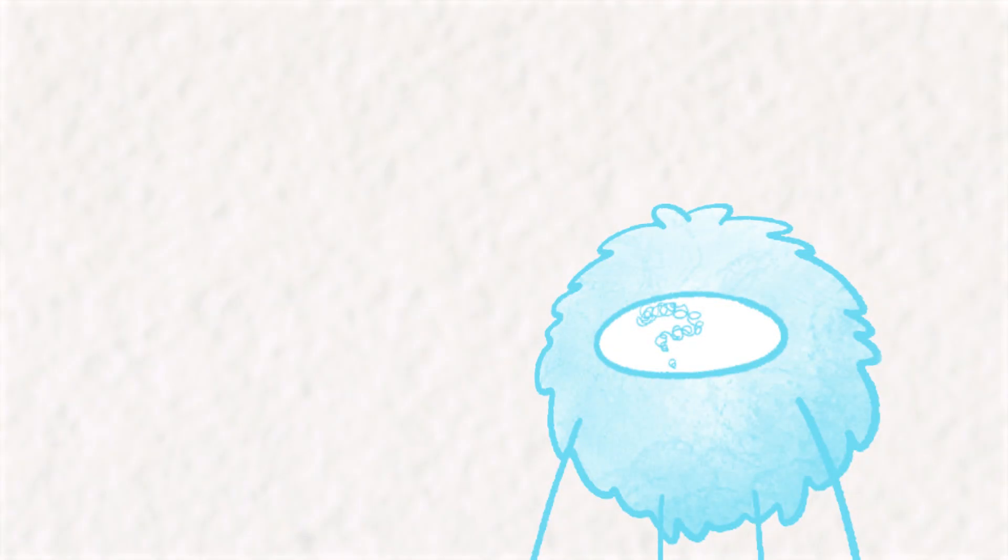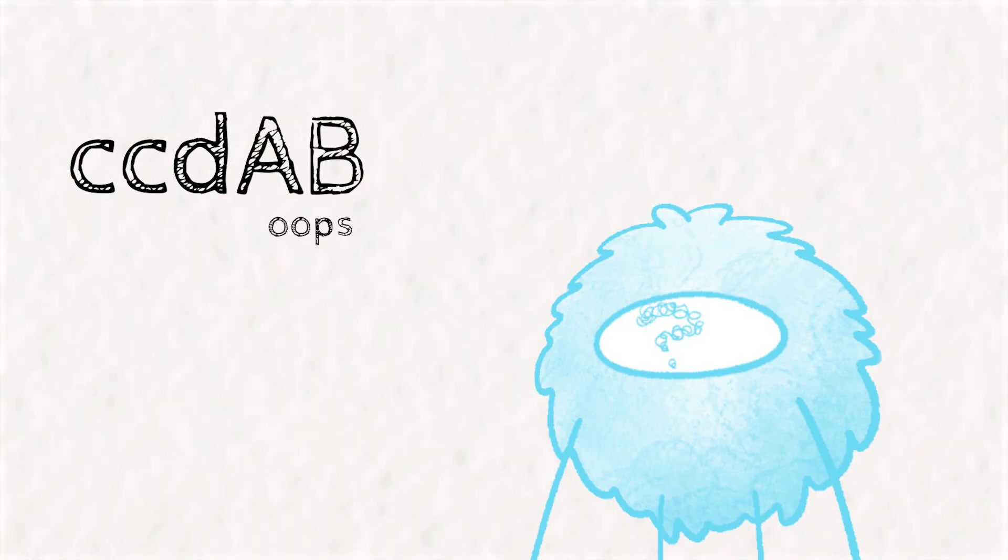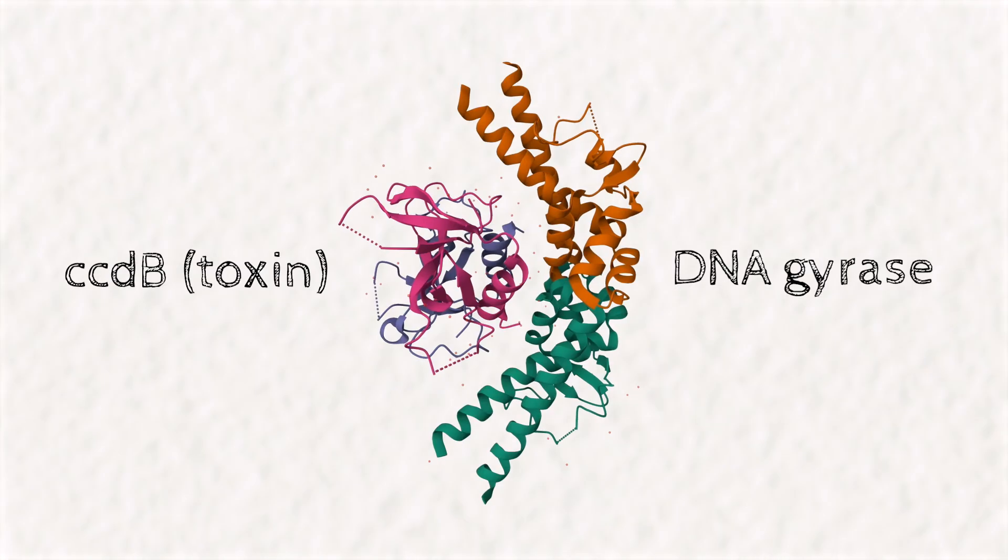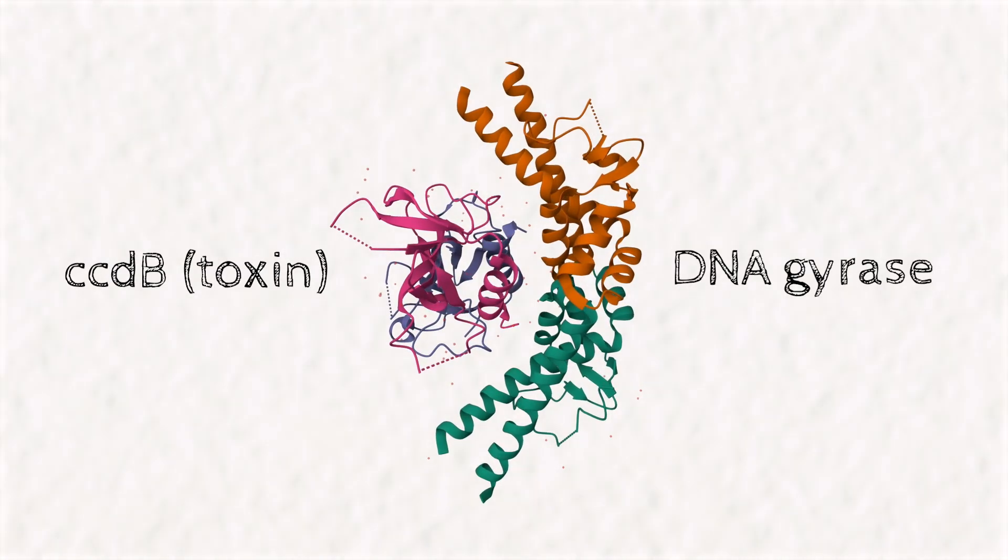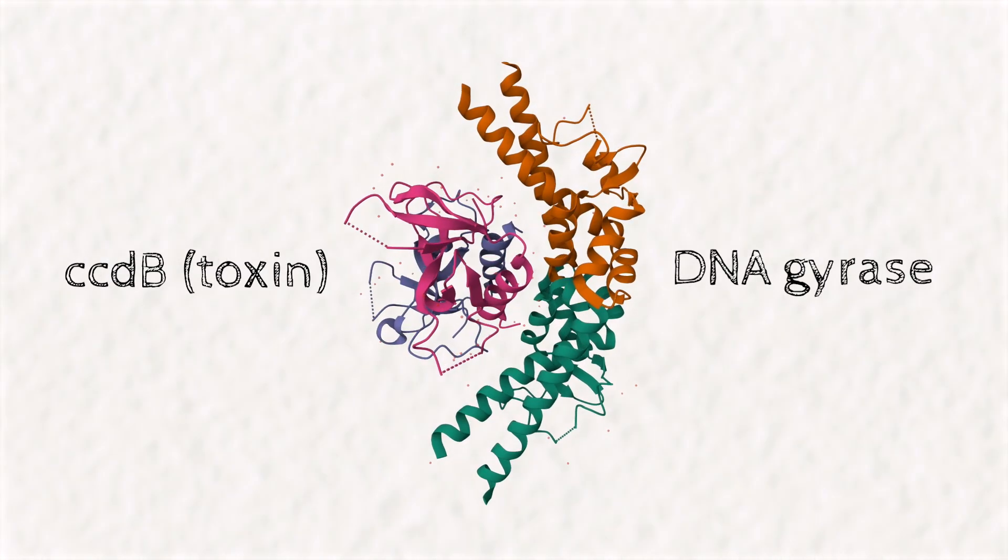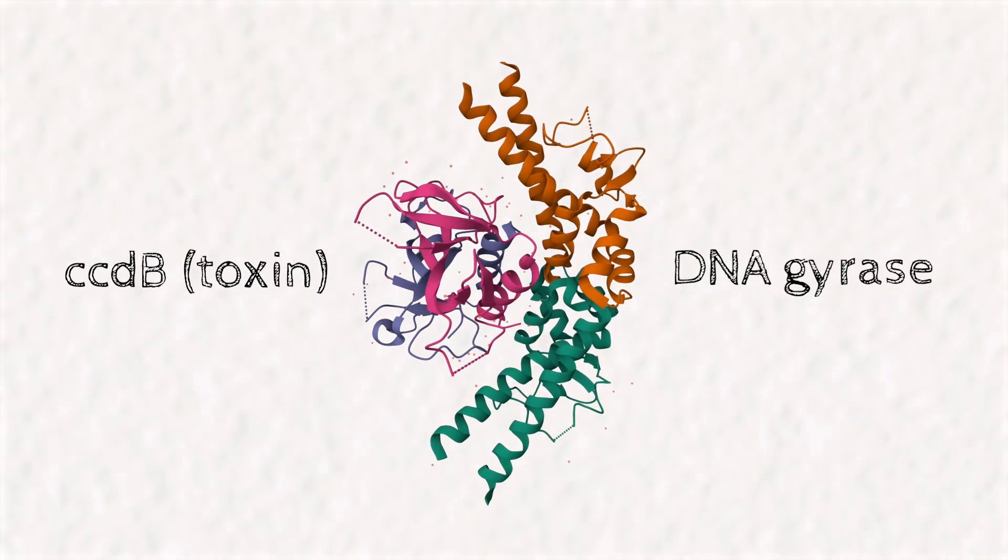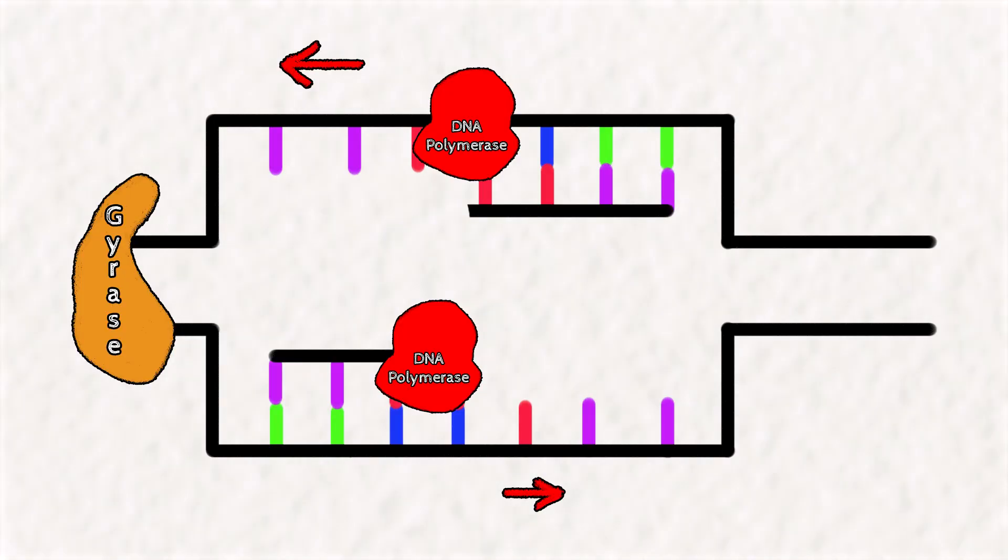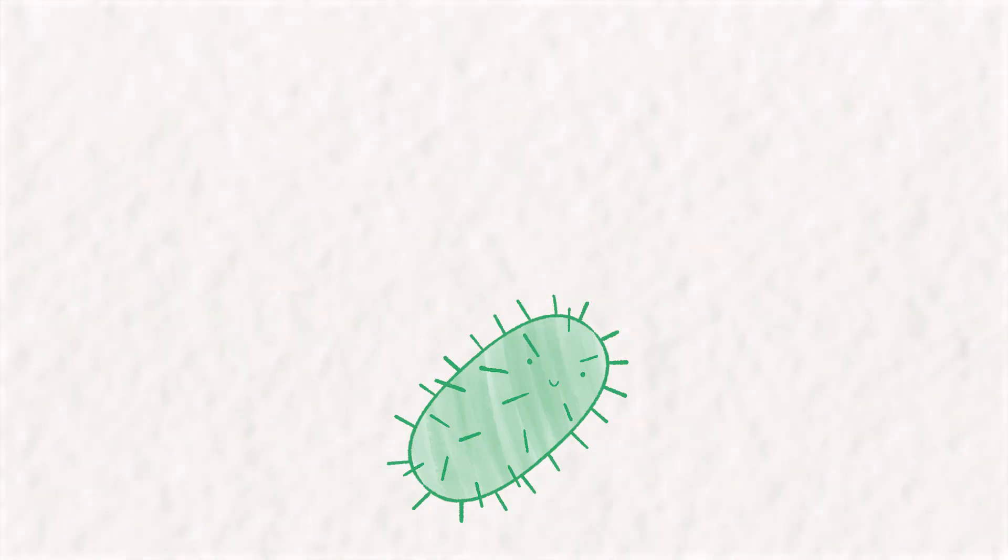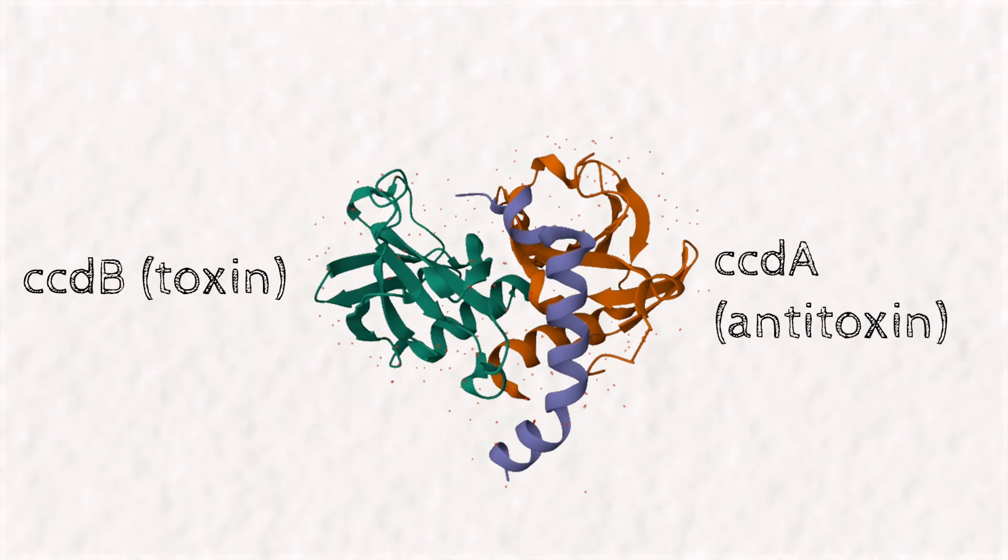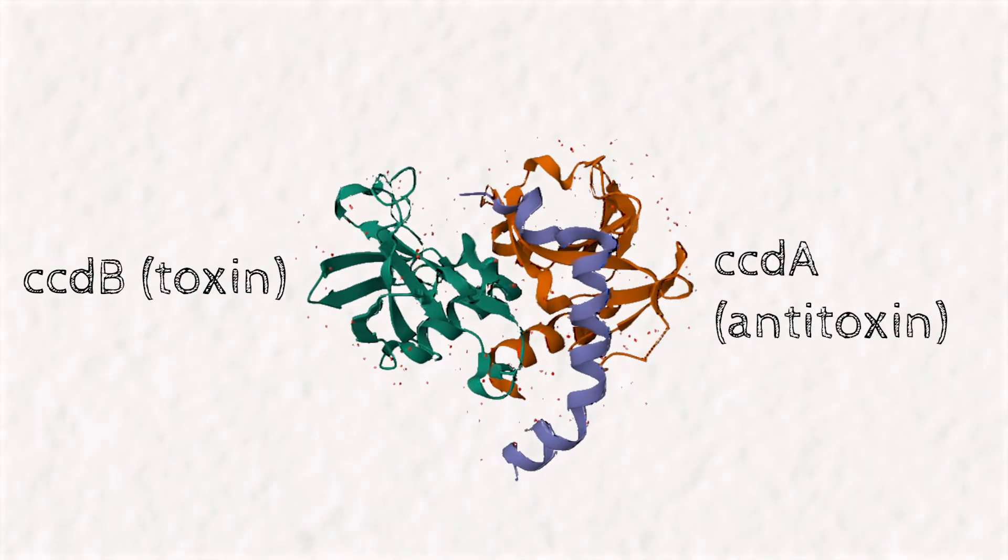Is there any evidence that these addictive systems are purely selfish? At least one of them, the CCDB/AB system appears to be. CCDB is a gene that makes a protein that interferes with DNA gyrase, an enzyme required for correctly unwinding DNA during replication. This poisons the cells by interfering with bacterial reproduction. The antitoxin CCDA codes for a protein that stops the toxin from binding DNA gyrase.